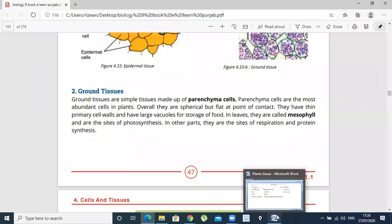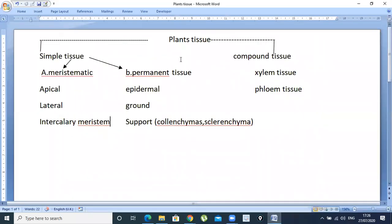We have studied Plant Tissues. We saw that there were two types of plant tissues: Simple Tissues and Compound Tissues. We have studied Simple Tissues.